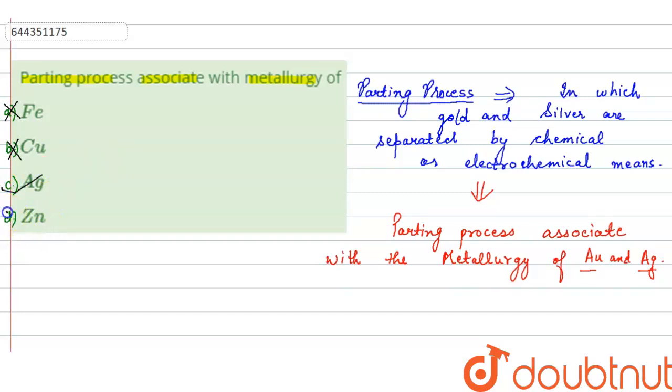And in option D, zinc is given, this is wrong. So here option C, i.e., silver is the correct option.